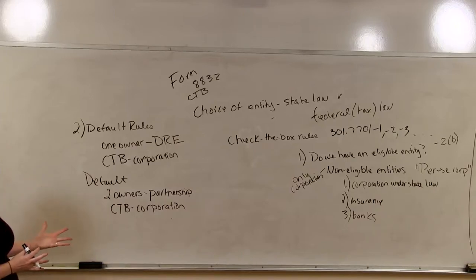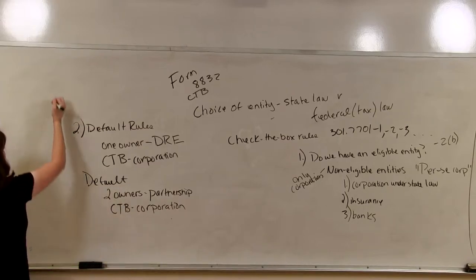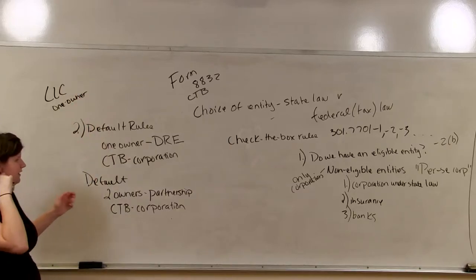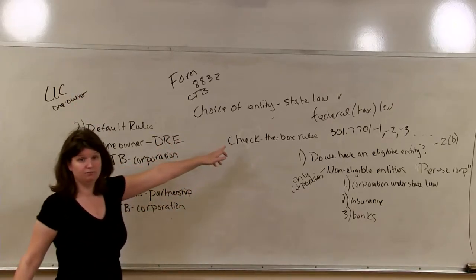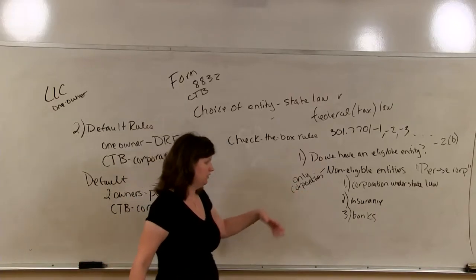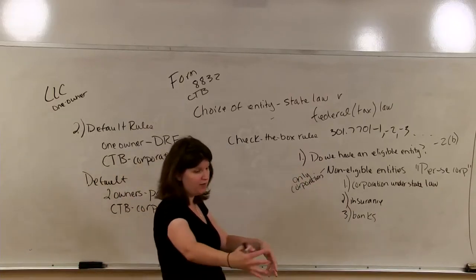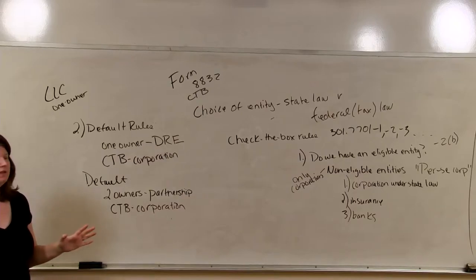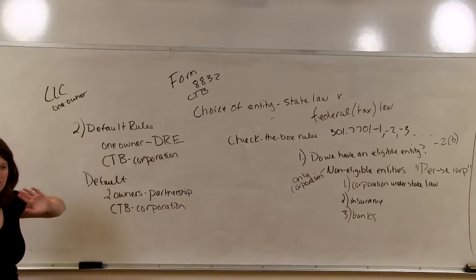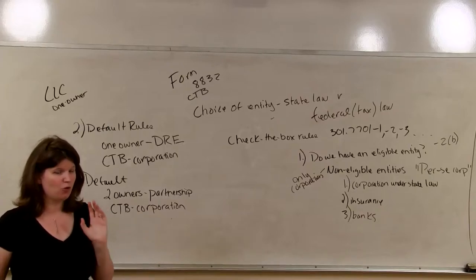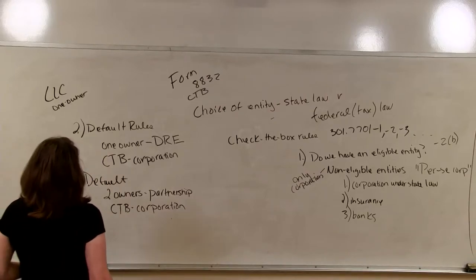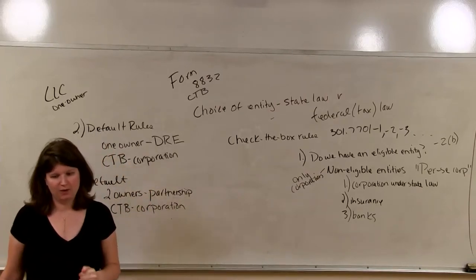Let's go through some examples. If we have an LLC under state law with one owner — is it an eligible entity? Yes. It's not a corporation under state law, it's not doing insurance or banking. With one owner, it defaults as a disregarded entity. If they decide they want to be taxed as a corporation, they have to file an election and check the box to become a corporation.